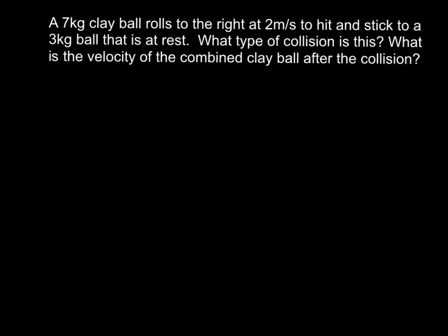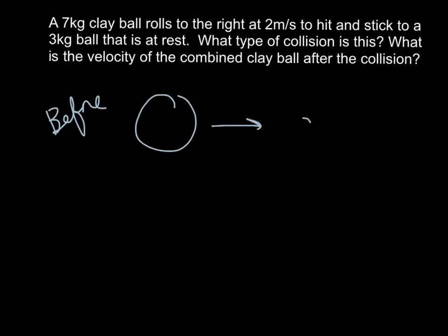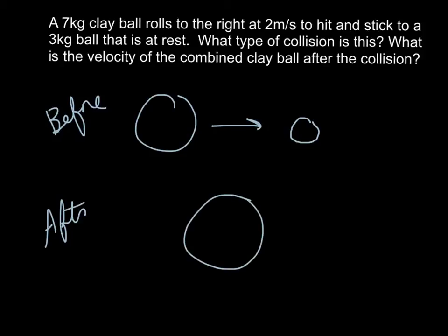In our second example, a 7kg clay ball rolls to the right at 2 meters per second, hits and sticks to a 3kg ball that is at rest. What type of collision is this, and what is the velocity of the combined clay ball after the collision? Before the collision, the 7kg ball rolls right and hits the stationary 3kg ball. Afterwards, they stick together into one bigger ball — like you hitting a chair in class, you'd keep rolling in the same direction but a little slower. Since they hit and stick together, this is a perfectly inelastic collision.